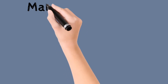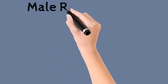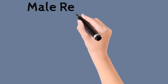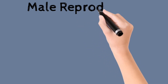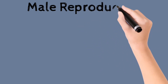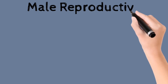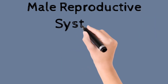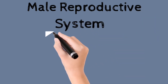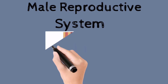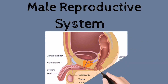Assalamu Alaikum students, welcome to our channel Study Time. Here we are going to discuss biology, and the topic of our discussion is the male reproductive system. As we know, this reproductive system consists of different organs and it is difficult to memorize their names.